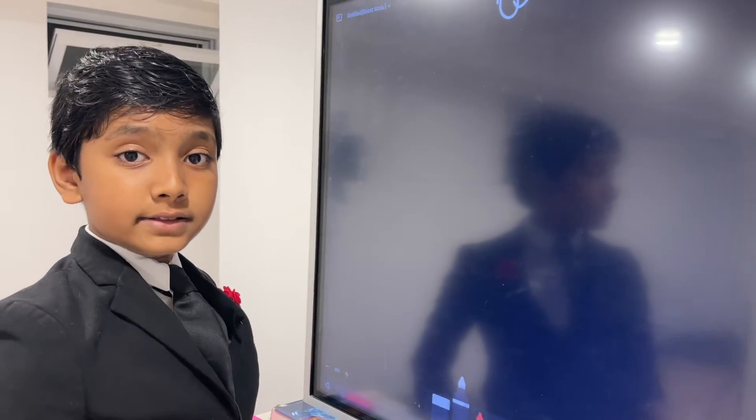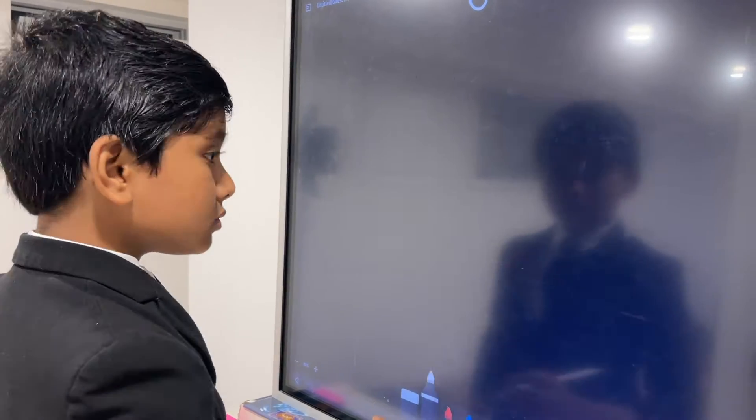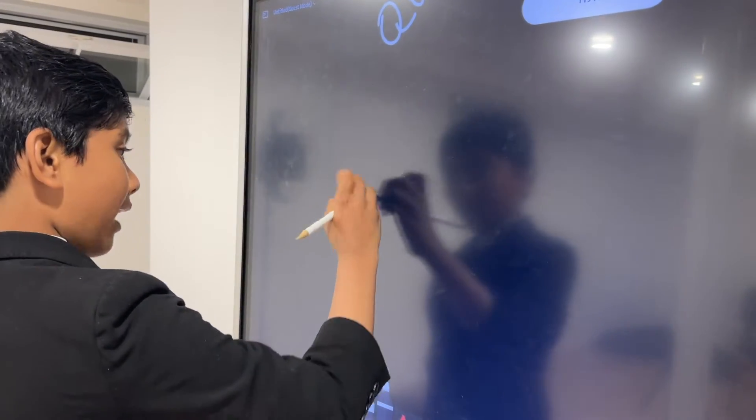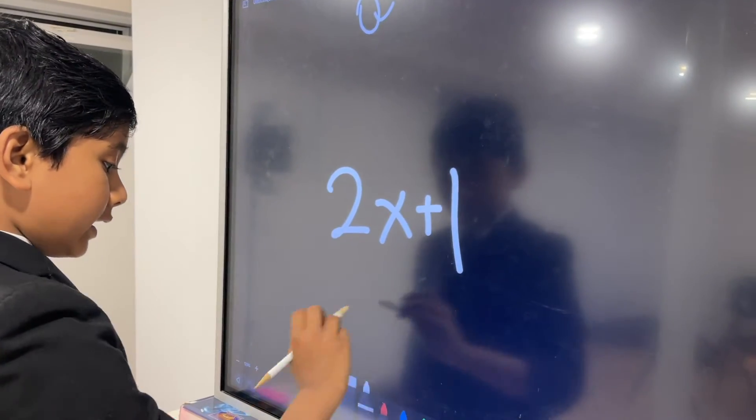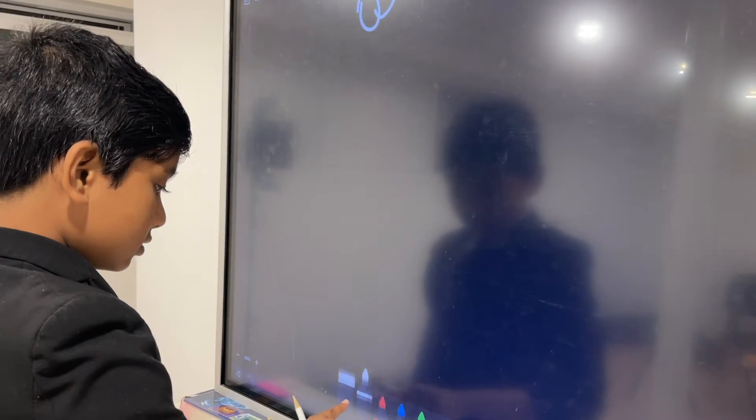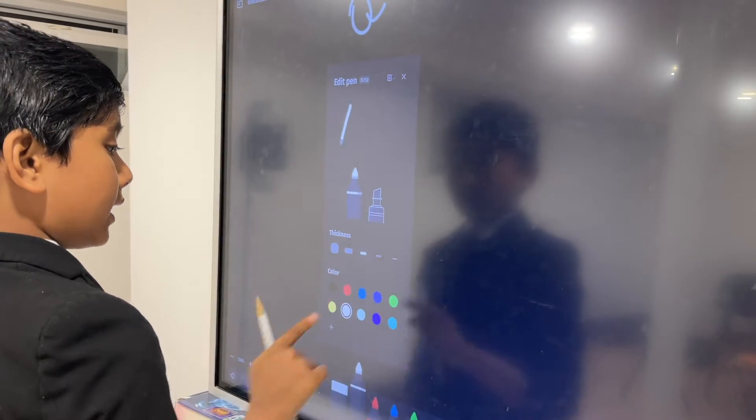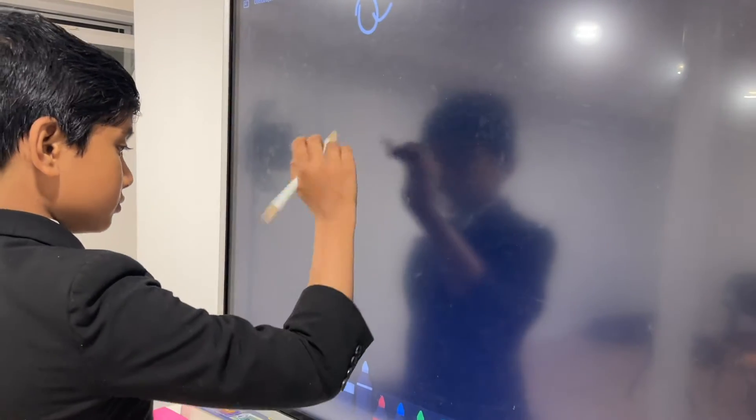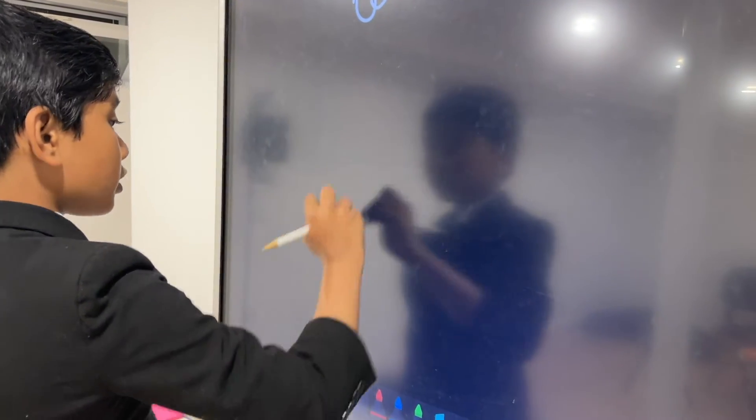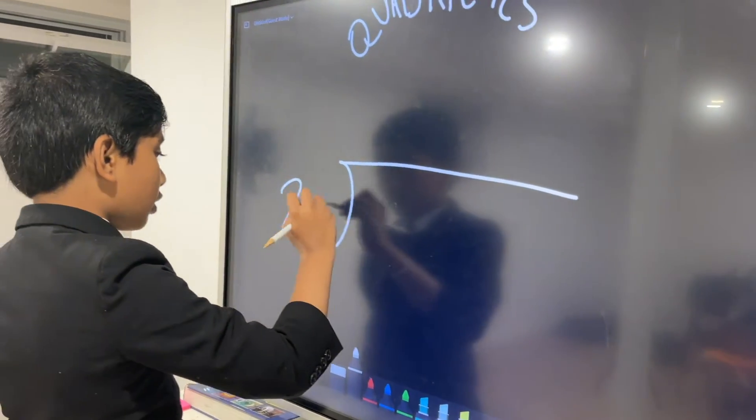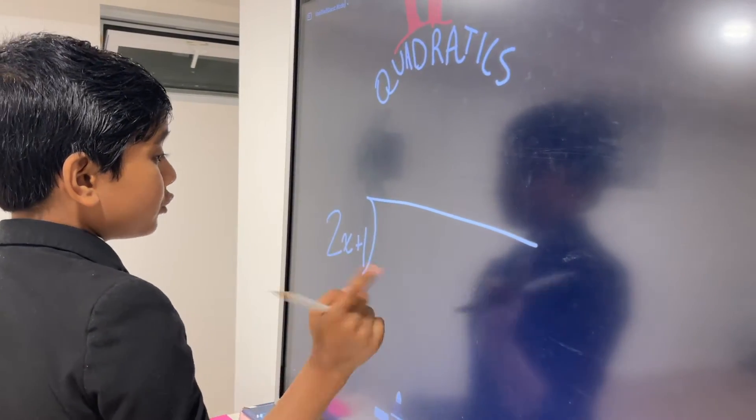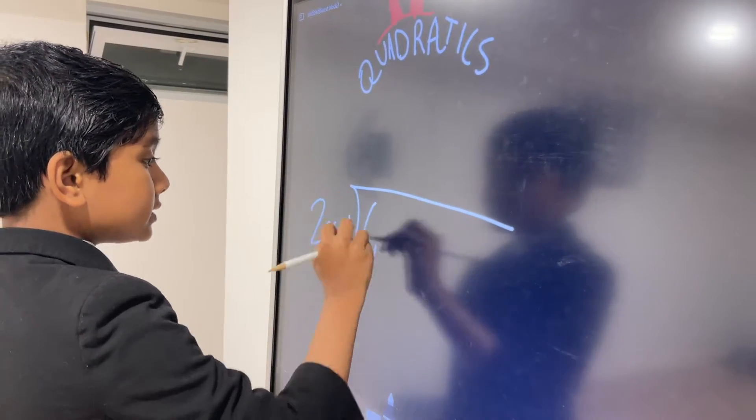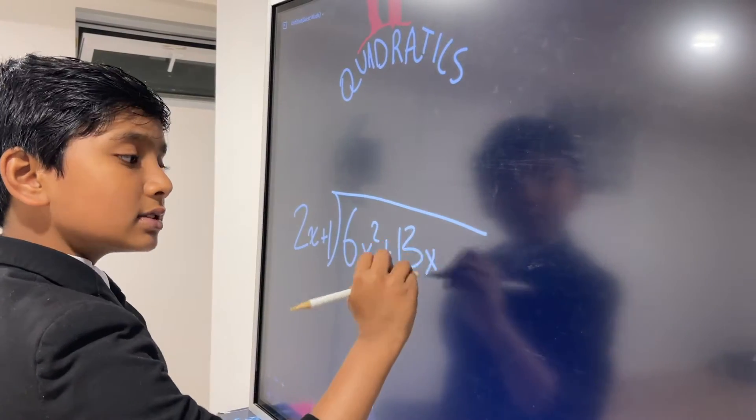So anyway, first of all, what we're going to do with quadratics is dividing quadratics. Let's say we have 2x plus 1. This is a little thick, you might want to change the thickness. First we're going to start by dividing quadratics, or dividing with trinomials. If we have 2x plus 1, let's say we have 6x squared plus 13x plus 8.